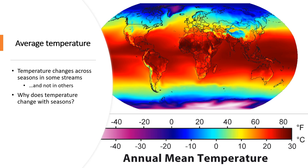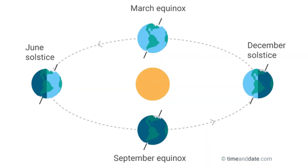Temperature in temperate zones changes across seasons. The vast majority of temperate zone land mass is in the northern hemisphere, as you can see on the map. Why does temperature change with season? The answer relates to how the Earth moves in space. The Earth rotates around the sun, but it is slightly tilted — not perfectly upright — so at certain periods of its rotation, sunlight impacts one area more or less than another.